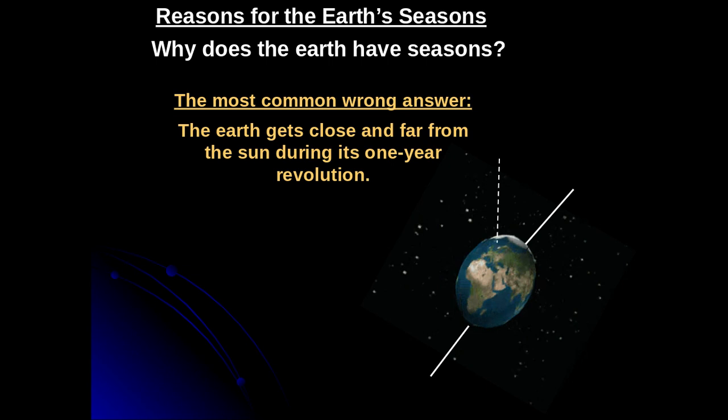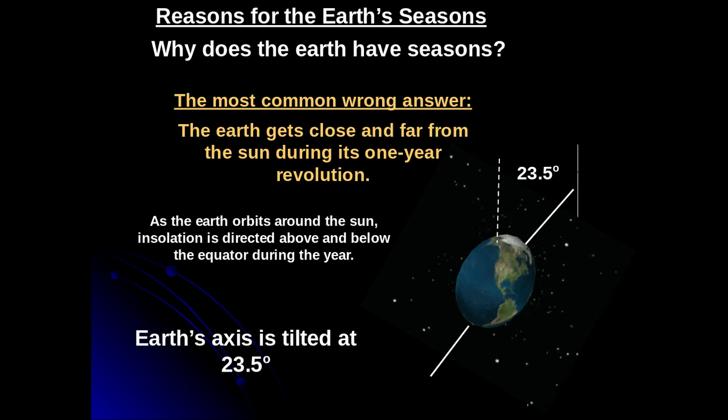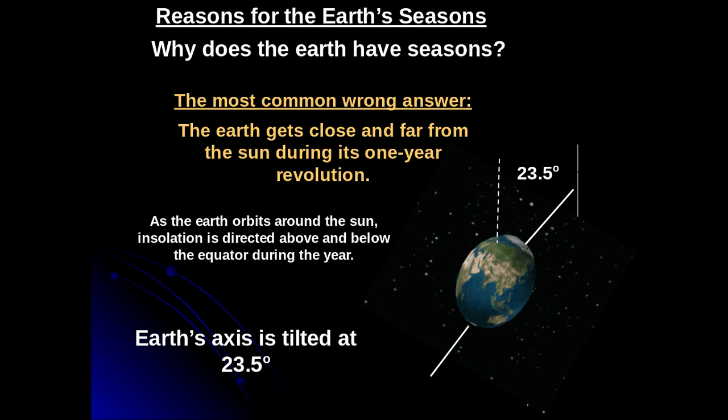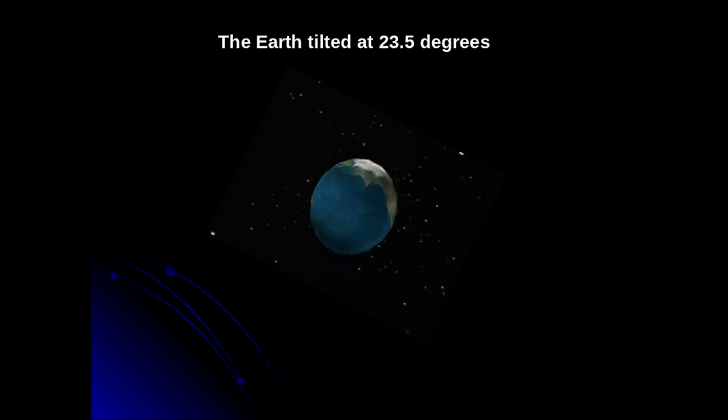Really it boils down to this: the Earth orbits around the sun, and the sunlight or insolation is directed above and below the equator during the year because the Earth's axis is tilted at 23.5 degrees. That really is the bottom line answer — the tilting of the Earth. So the next several slides we're going to look at the geometry of that 23.5 degree tilt and how that expresses the seasons in each one of the hemispheres of the Earth.